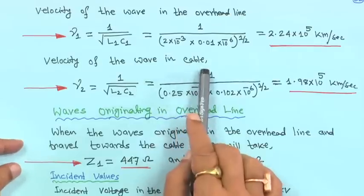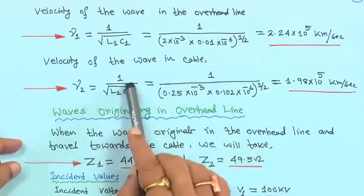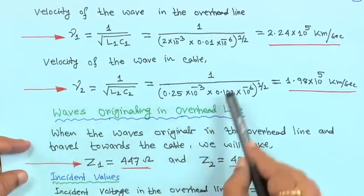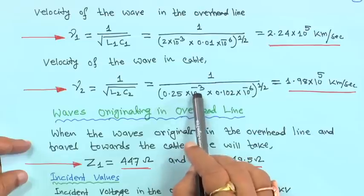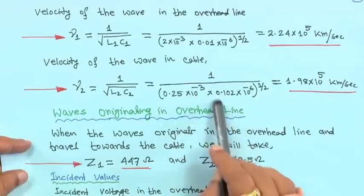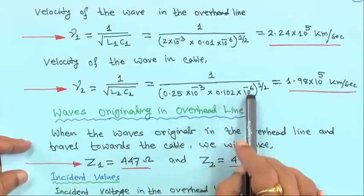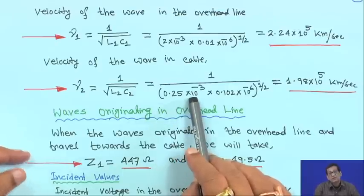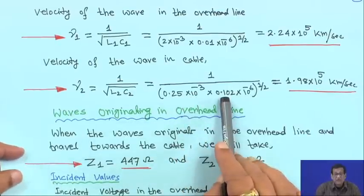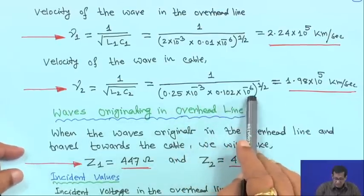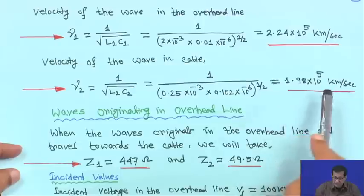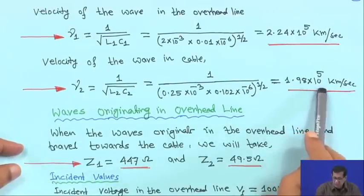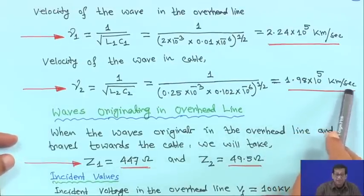Similarly, the velocity of the wave in the cable equals 1 upon root over L2·C2, which is 1 upon root of 0.25×10⁻³ multiplied by 0.102×10⁻⁶. This gives 1.98×10⁵ kilometers per second.